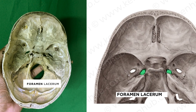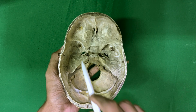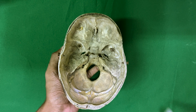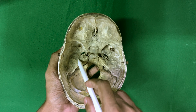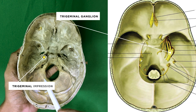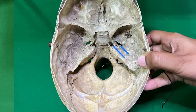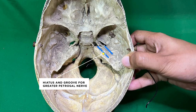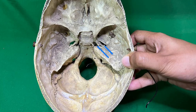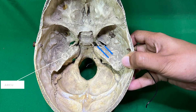The foramen lacerum lies posteromedial to the foramen ovale. Further posteriorly, the anterior surface of the petrous temporal bone presents a trigeminal impression lying near the apex behind the foramen lacerum. It lodges the trigeminal ganglion within its dural cave. The hiatus and groove for the greater petrosal nerve are present laterally to the trigeminal impression and lead to the foramen lacerum. Lateral to that is the hiatus and groove for the lesser petrosal nerve. Still more laterally, there is the arcuate eminence produced by the superior semicircular canal.